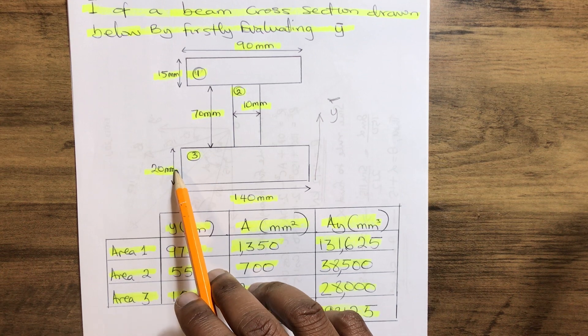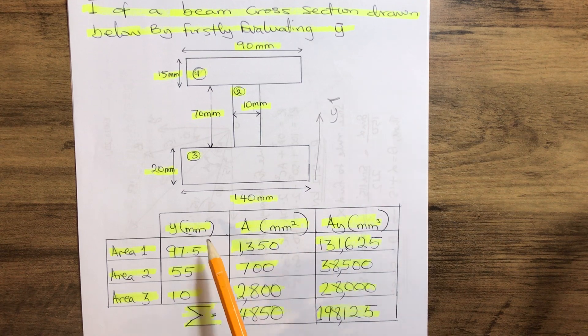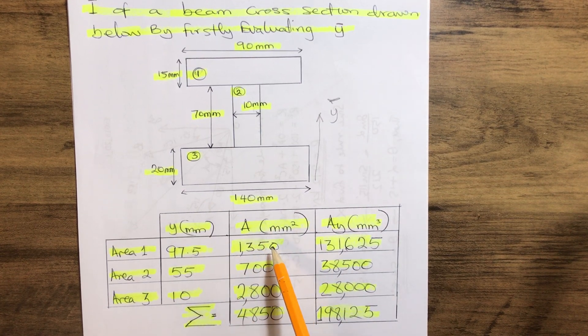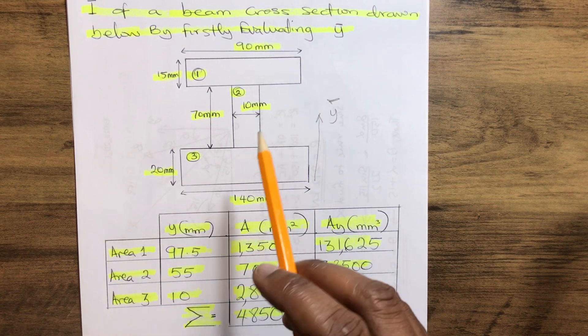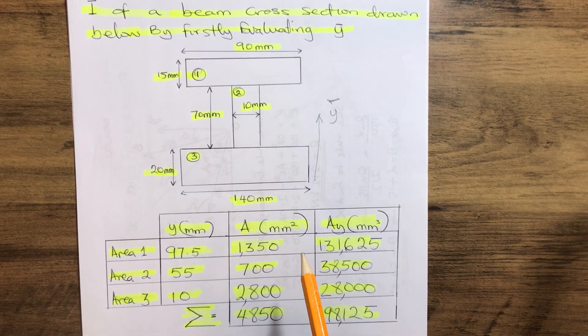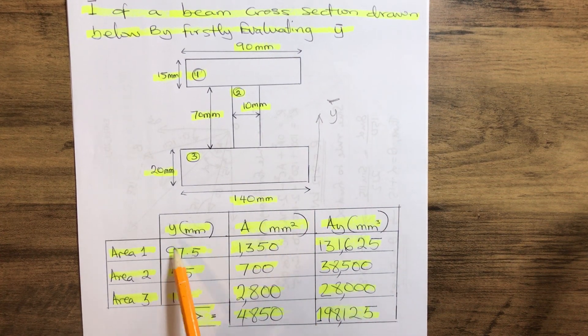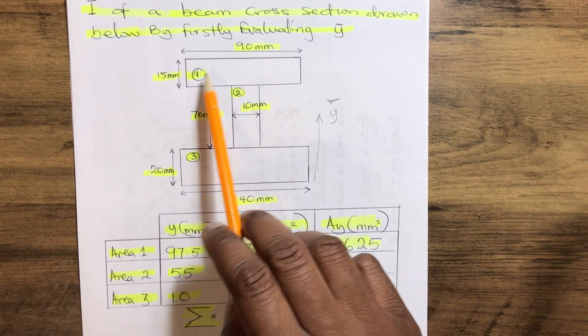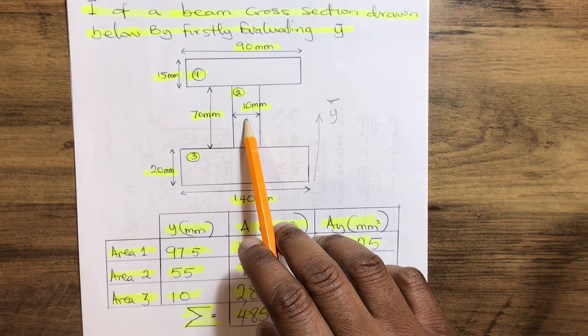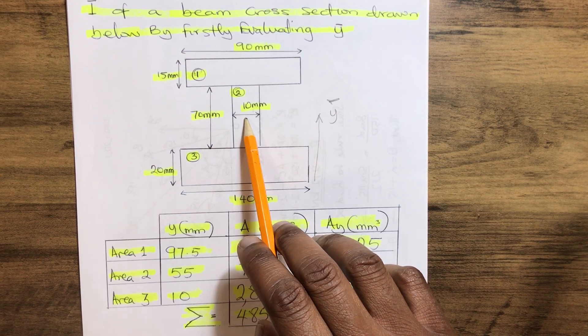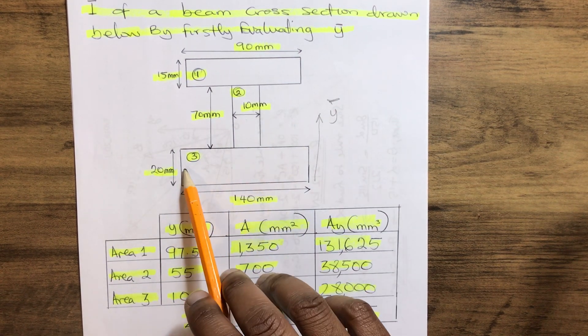We divide the depth of the third, that gives us 10. Now the next thing on the second column to find is the area. How do we calculate the area? We multiply the depth by the width of each section. So our section 1, which is 90mm multiplied by 15mm, that gives us this. Also our second area of the web, 70 multiplied by 10, that gives us 700.